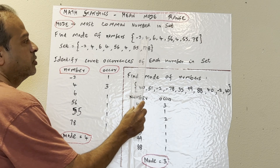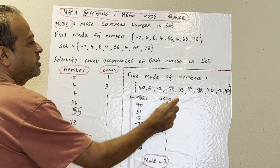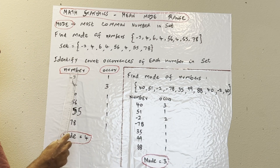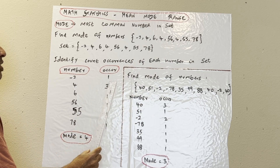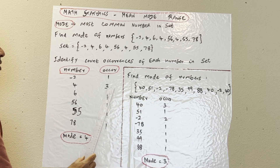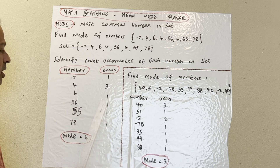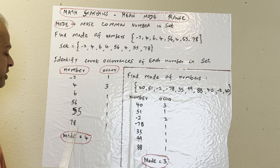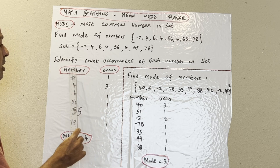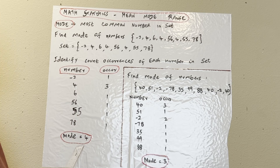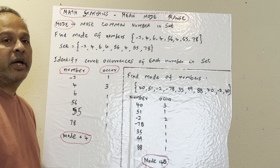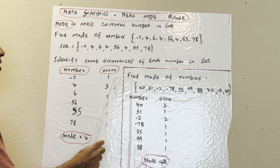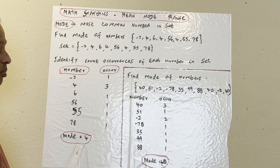The set is: negative 2, 4, 6, 4, 56, 4, 55, 78. We have the number and the number of occurrences — how many times each number appears. Negative 2 appears only once. Number 4 appears 3 times. Likewise for other numbers: 6 is 1 time, 56 is 1 time, 55 is 1 time, 78 is 1 time. The most occurrences is 3 times, so the mode equals 4.